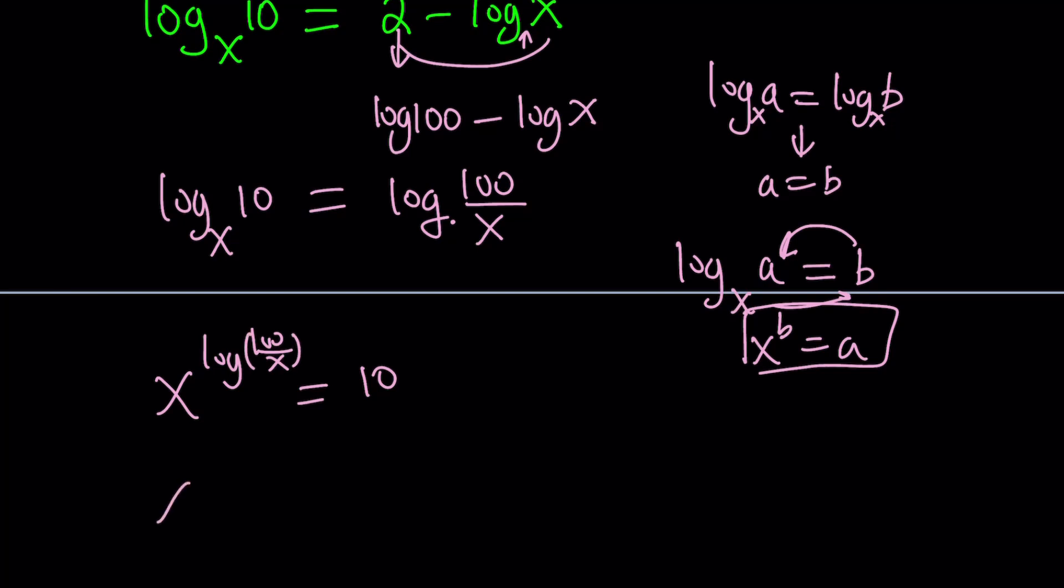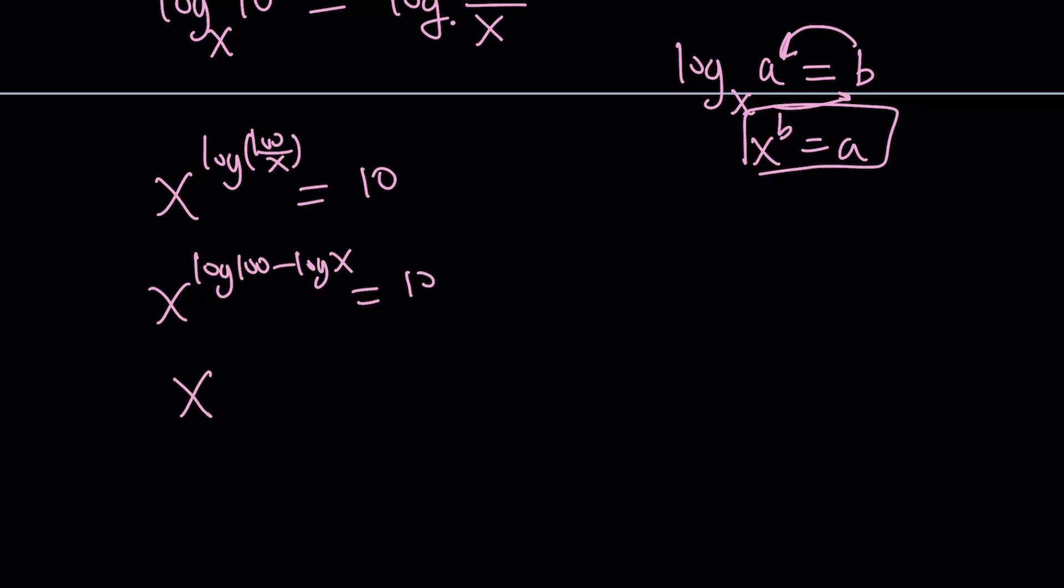We could simplify this. Write it as log 100, which is 2, minus log x equals 10. Then we can write it as x to the power 2 minus log x equals 10. From here, we could hopefully do something by logging both sides. At this point, I think it makes sense because we have the base x. Let's go ahead and log both sides with base 10, of course.